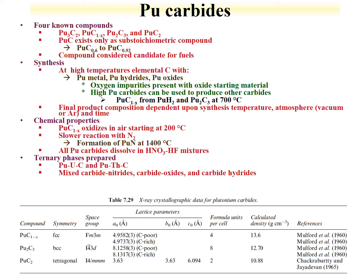Other plutonium compounds are the carbides. Carbides have been proposed as nuclear fuel. There are four known plutonium carbides. The plutonium monocarbide exists only as a substoichiometric compound, PuC₀.₆ to just below 1. Synthesis can use the metal, the hydrides, or the oxides with elemental carbon combined at high temperature. Controlling stoichiometry is useful for controlling the final product. The carbides oxidize in air starting at around 200°C and react with nitrogen — part of a carbothermic reduction process to form plutonium nitride.